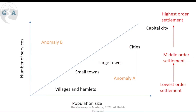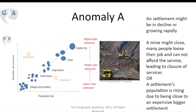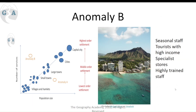There are also anomalies in settlement patterns. Anomaly A is where you have a large population size but low-order settlements — this could be areas with a specific industry like mining, where there aren't cinemas or football stadiums, but a large workforce population exists. Anomaly B is where you have a low population size but a high number of services — seasonal tourist resorts are a good example, where few people are full-time residents but services are very high to accommodate visitors.